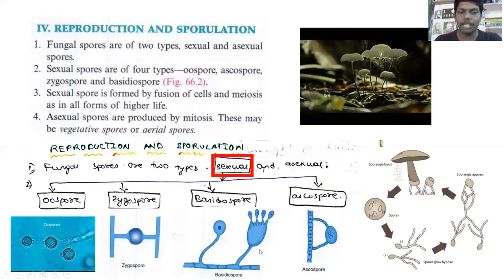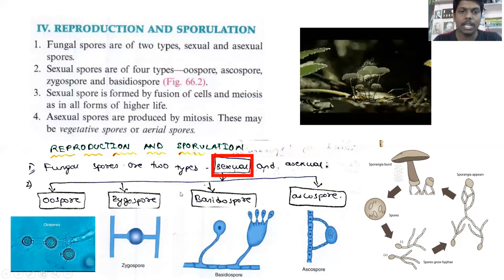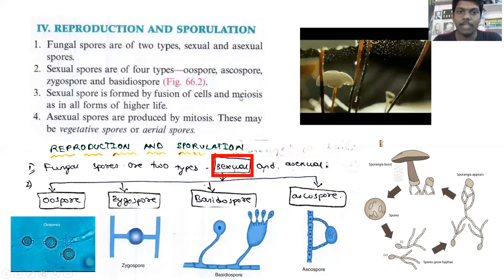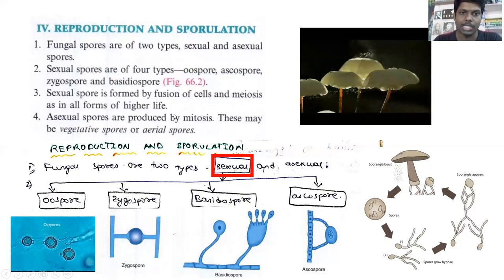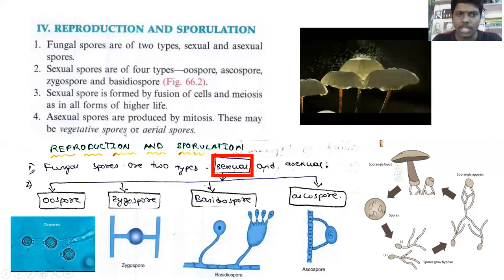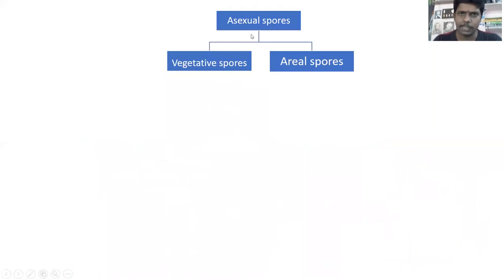Now let us see about asexual spores. Sexual spores are reproduced by meiosis — by meiotic cell division. Whereas asexual spores are formed by mitosis. Asexual spores are of two types: vegetative spores and aerial spores. Vegetative spores are the spores present beneath or below the medium, whereas aerial spores are present above the medium.